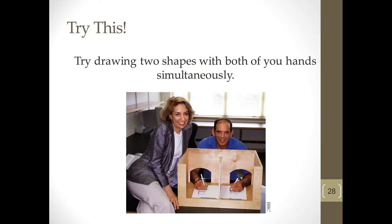People with split brain are able to draw two distinct images simultaneously. If I were to give you two pencils and ask you to draw two different shapes, it would be near impossible. This is also part of why it's so difficult to rub your belly and pat your head — because of the need for communication between the two sides of the brain. Individuals without that connection are able to do these tasks much more easily because they have the left brain controlling the right hand and the right brain controlling the left hand independently.